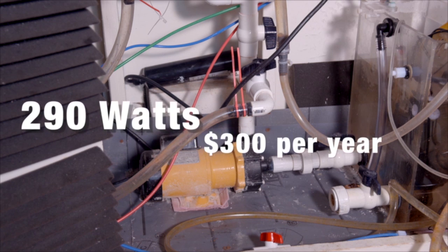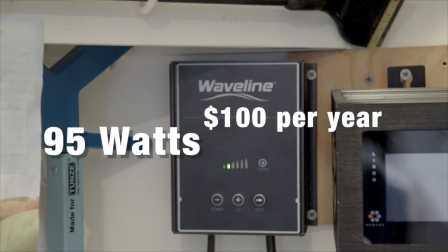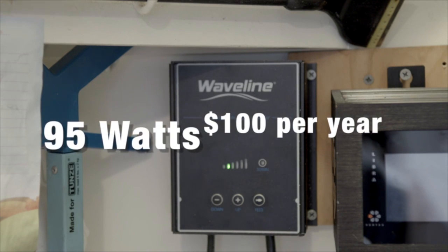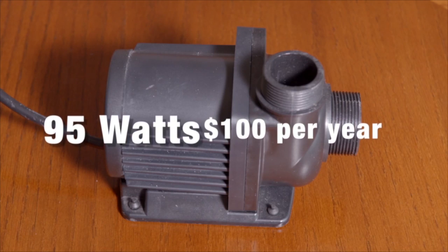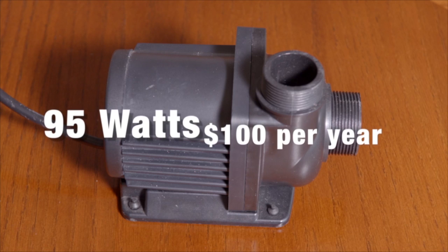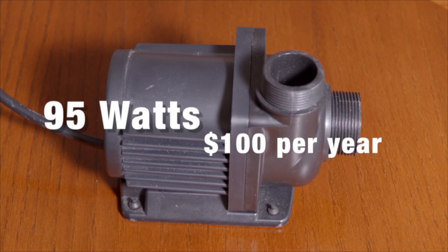My new Waveline 10,000 is a direct current pump, and it runs much more efficiently at 95 watts on full. This would cost me about $100 in electricity every year if we were to run it on full. But wait!